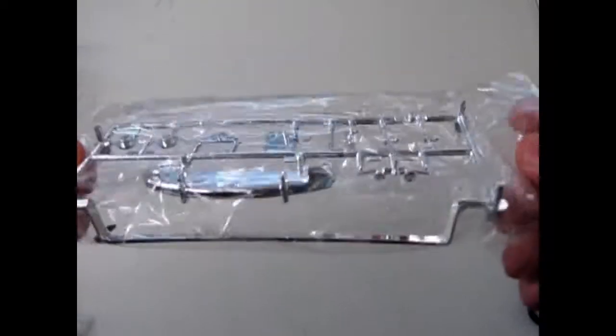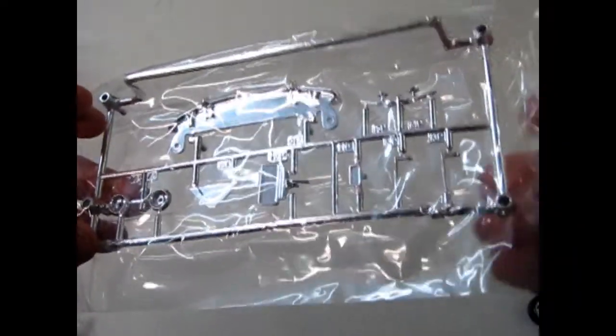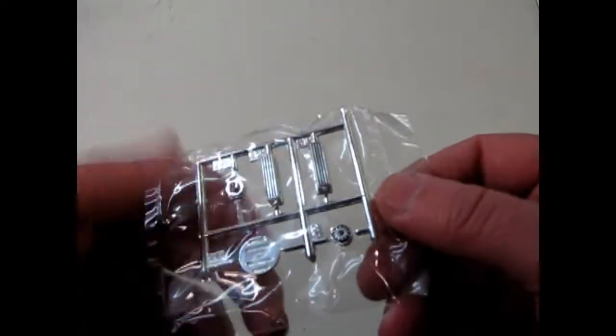Then we've got some chrome here. The front bumper, some door handles and headlights, as well as hood ornament things. There's a lot of chrome in this kit considering.